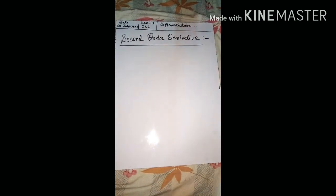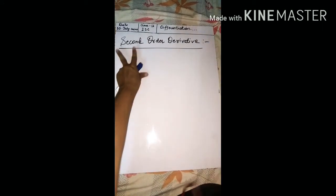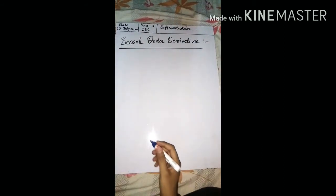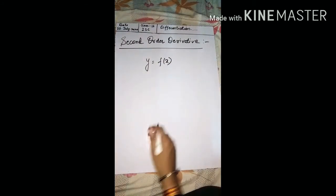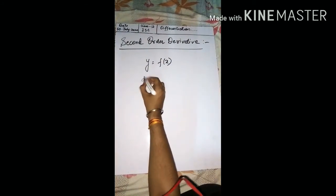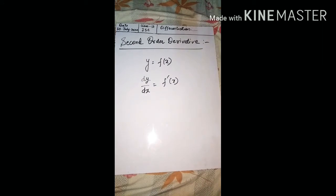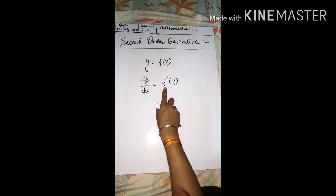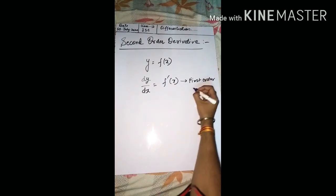Now let us come to the second order derivative. If you see the words 'second order derivatives', that means: for example, y = f(x). If I differentiate for the first time — differentiating both sides — we get dy/dx = f-dash(x). If a function f is differentiable at point x, then its derivative f-dash is called the first order derivative.